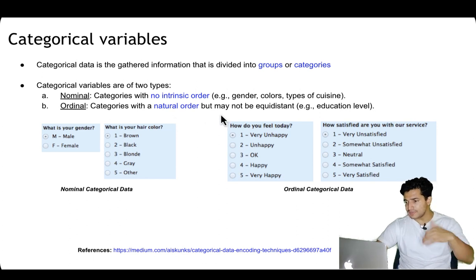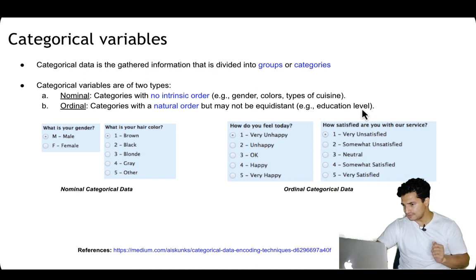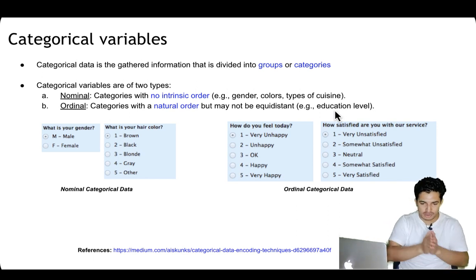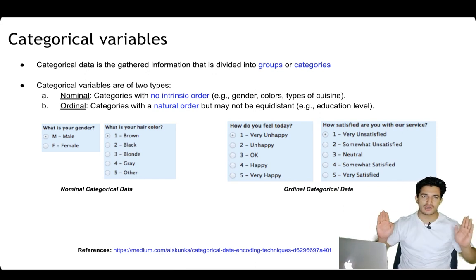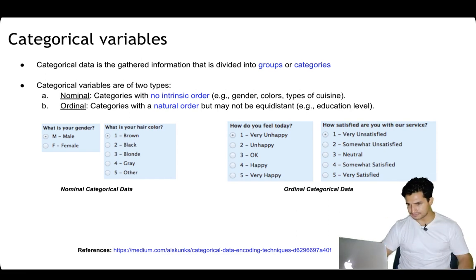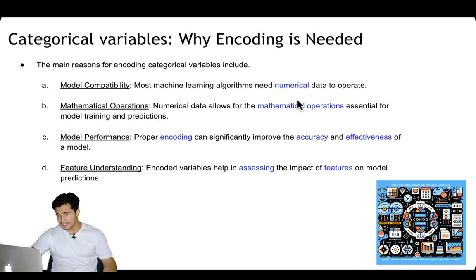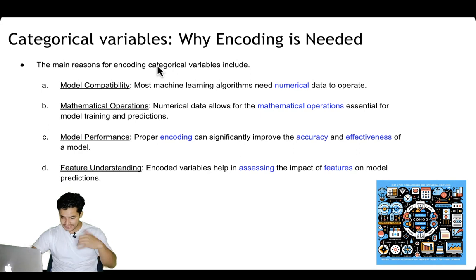In ordinal categorical data, there is a natural order, which may not be equidistant but definitely has some ordering. For example, education level, or how you feel today: unhappy, okay, happy, very happy. Similarly, how satisfied are you with our service? Or education level: 10th pass, 12th pass, degree, masters, and so on. There may not be equal distance but there is a natural order.